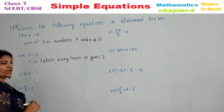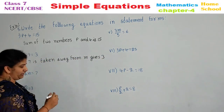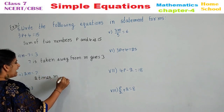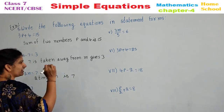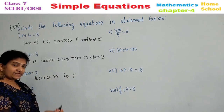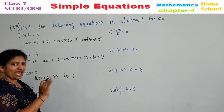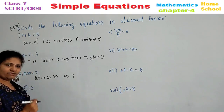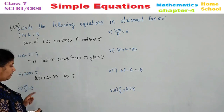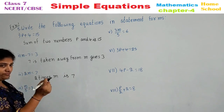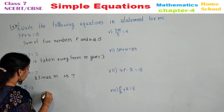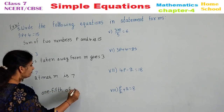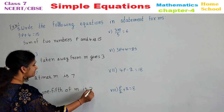Third one: 2M is equal to 7. Two times M is 7. Framing a statement is very easy, and statement to equation is also easy. Fourth one: M by 5 is equal to 3. One fifth of M is 3.